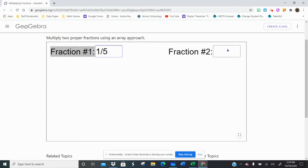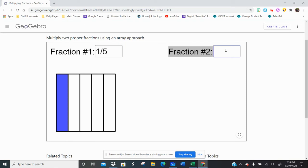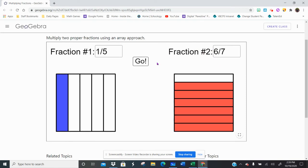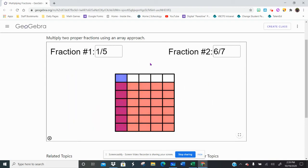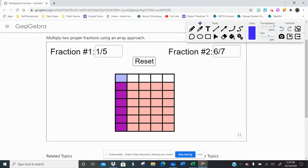So say I have one fifth and I want to multiply it by six sevenths. So I type in my two fractions and then when I hit go, it'll overlap them for me. So I kind of get this gridded effect. So again, my denominator, right on this thing, is how many little boxes do I have? Well, I have a five by seven, which means there's thirty-five little boxes.